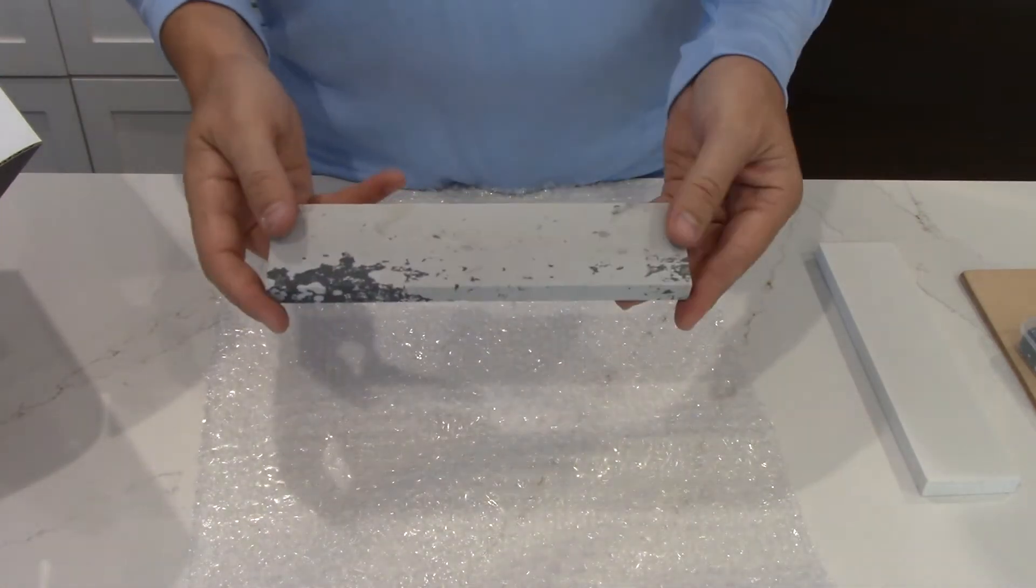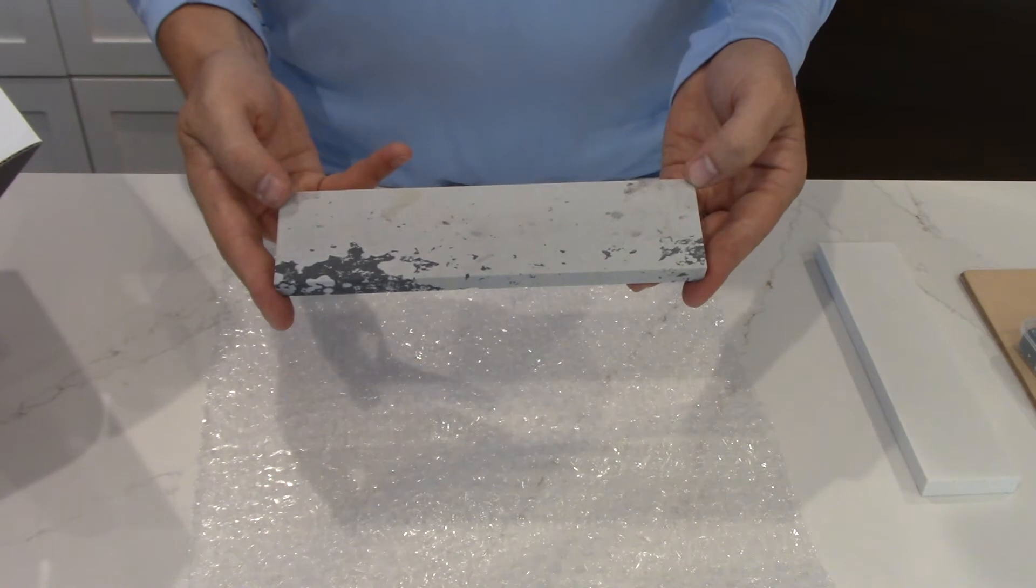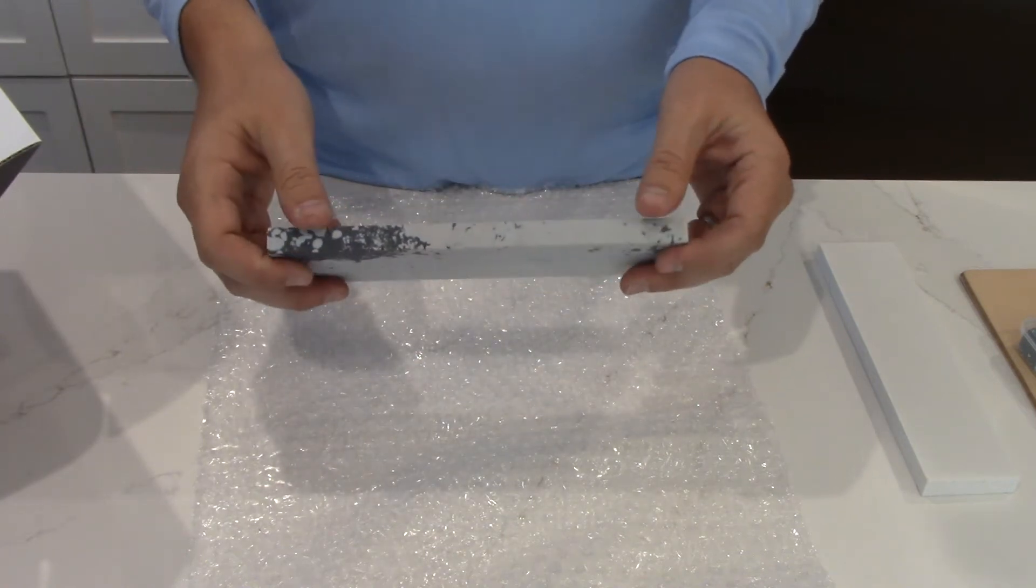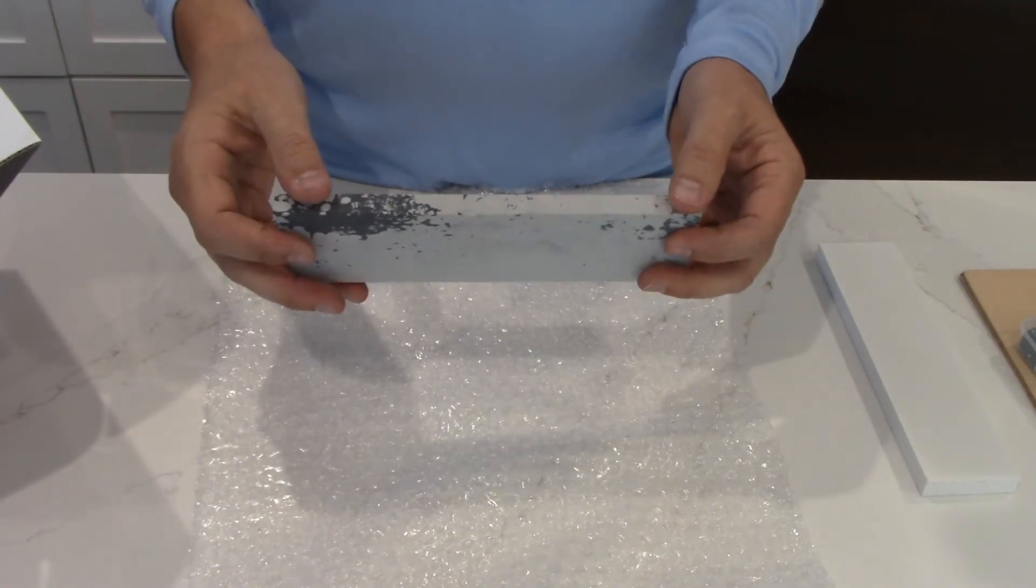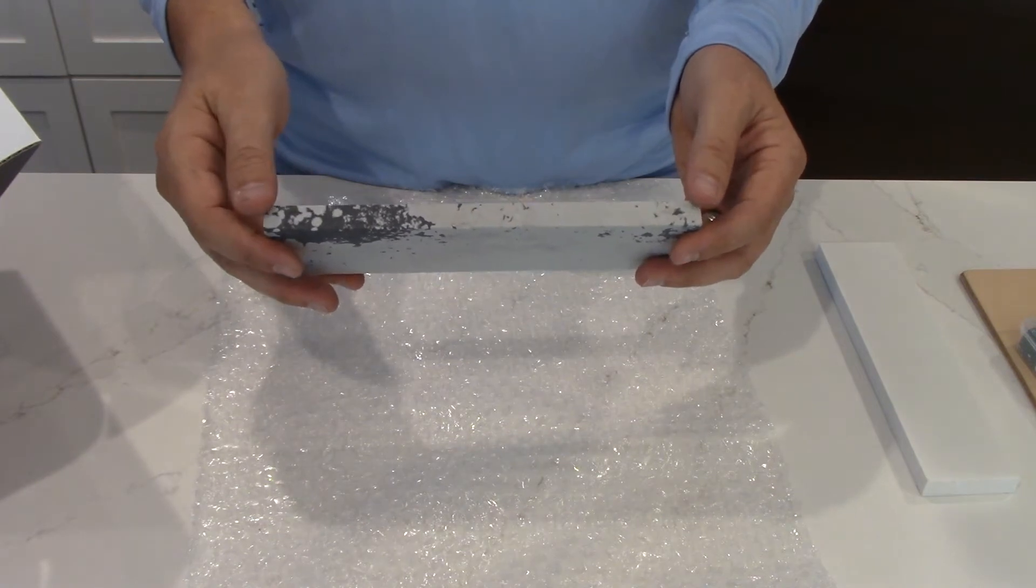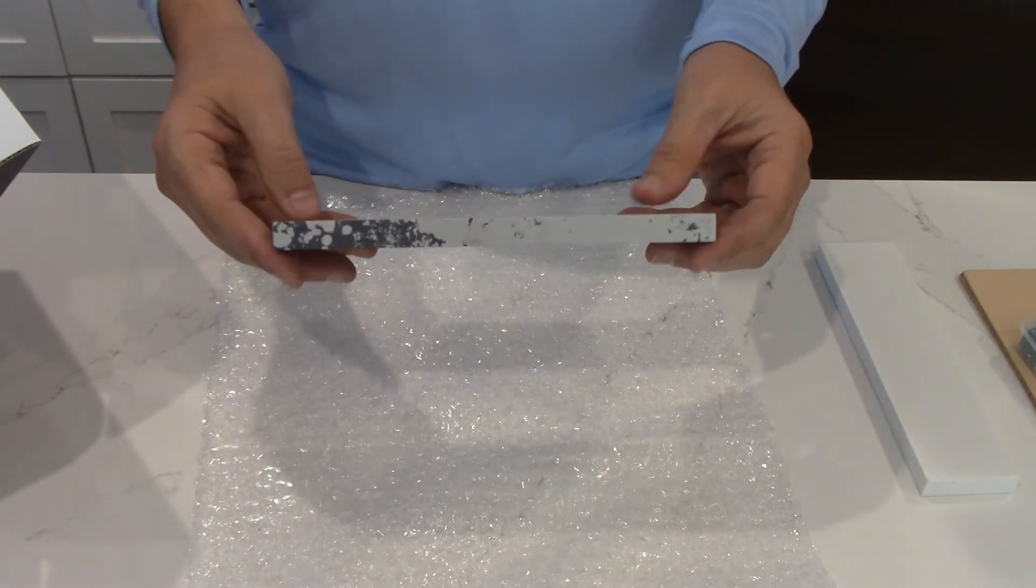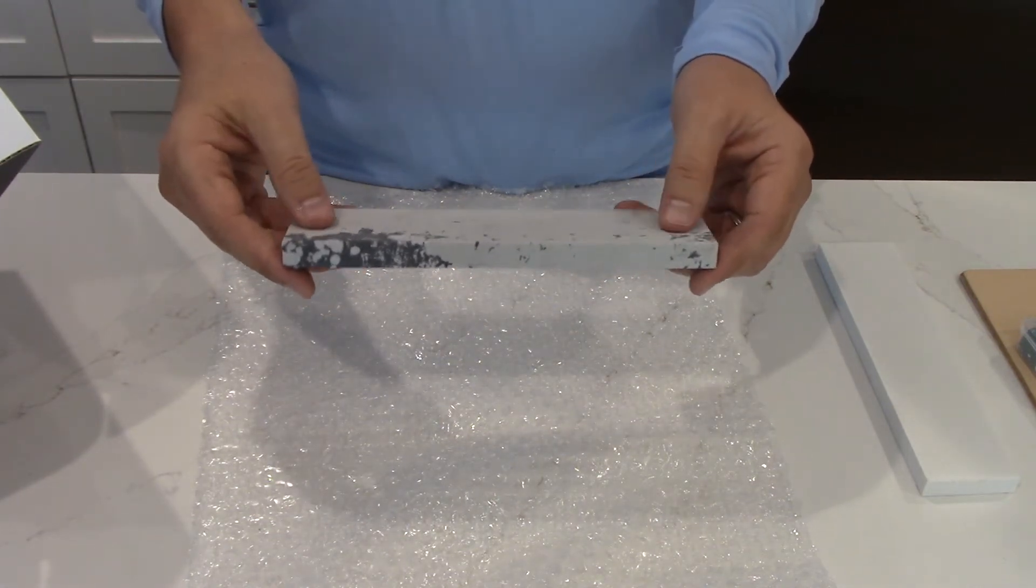And this is around a six to eight hundred grit stone, but they're not measured in that. They're actually measured—the coarseness is measured in specific gravity for these types of stones, but it's around six to eight hundred.